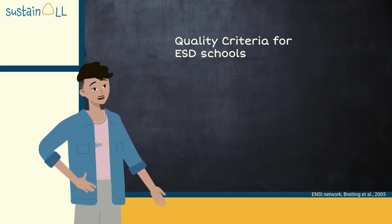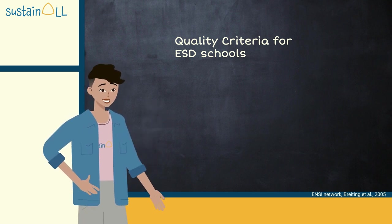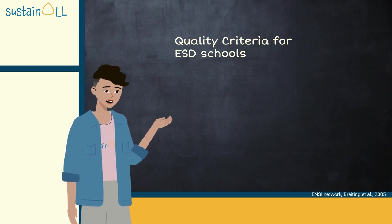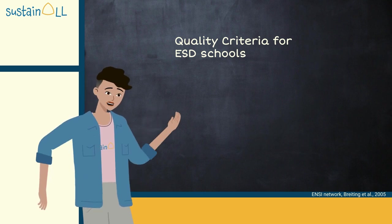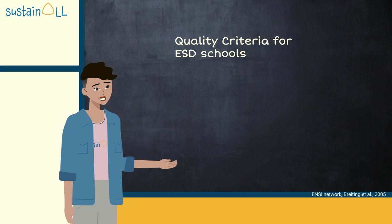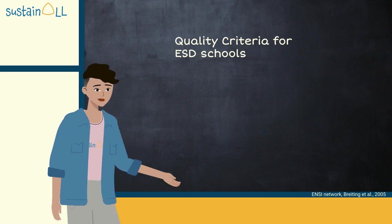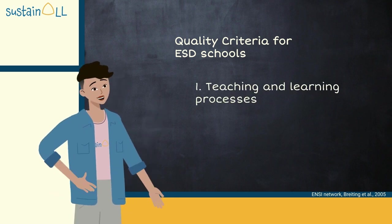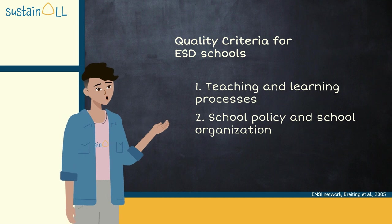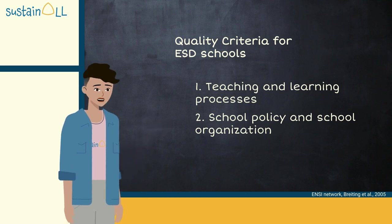Good ESD teaching is quality teaching. This model shows the three areas in which change should take place and where high quality is aimed for. First, teaching and learning processes. Second, school policy and school organization. And third, a school's external relations.